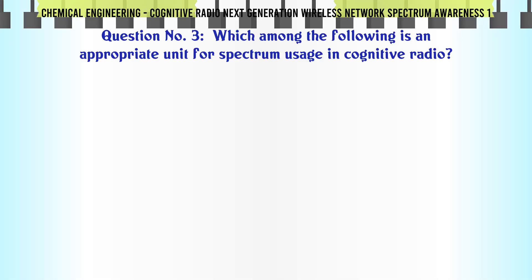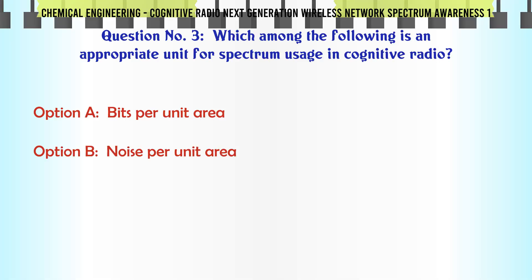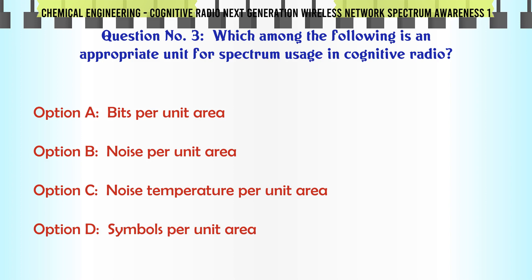Which among the following is an appropriate unit for spectrum usage in cognitive radio? A. Bits per unit area. B. Noise per unit area. C. Noise temperature per unit area. D. Symbols per unit area.